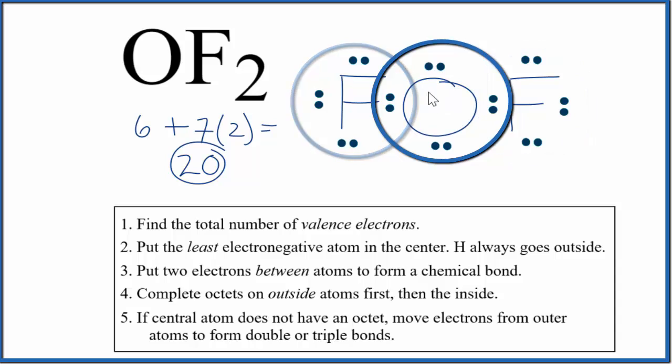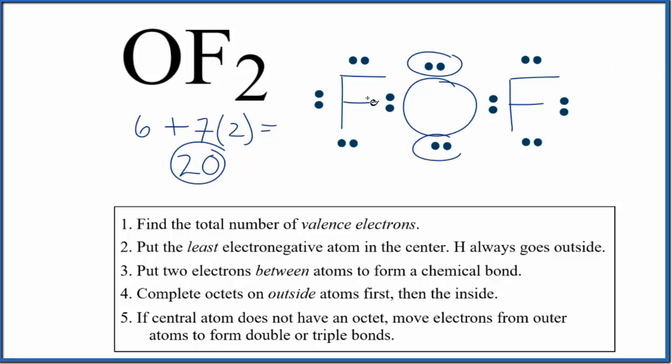This is the Lewis structure for OF2, oxygen difluoride. Note that this has a bent molecular geometry because the lone pairs push the fluorine atoms down. This is Dr. B with the Lewis structure for OF2, oxygen difluoride.